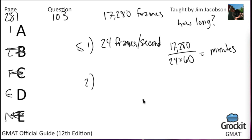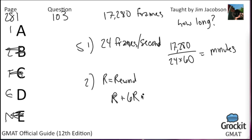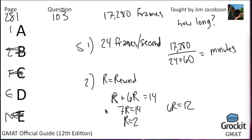Statement 2 says it takes six times as long to run the cartoon as to rewind the film, and it takes a total of 14 minutes to do both. Letting R equal rewind time: R plus 6R equals 7R equals 14, so R equals 2 minutes and playing time equals 12 minutes. Statement 2 is also sufficient, so the answer is D, not A.